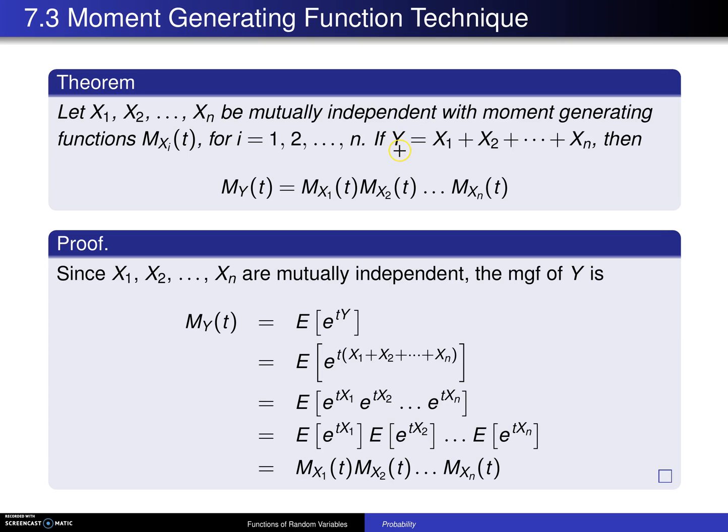If the random variable Y is the sum of these n mutually independent random variables, then the moment generating function for Y is the product of the moment generating functions for each of the Xᵢ's.